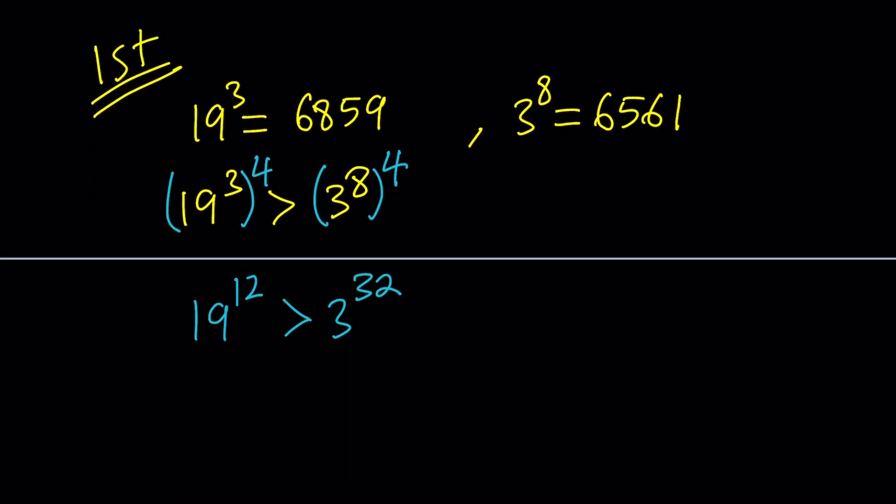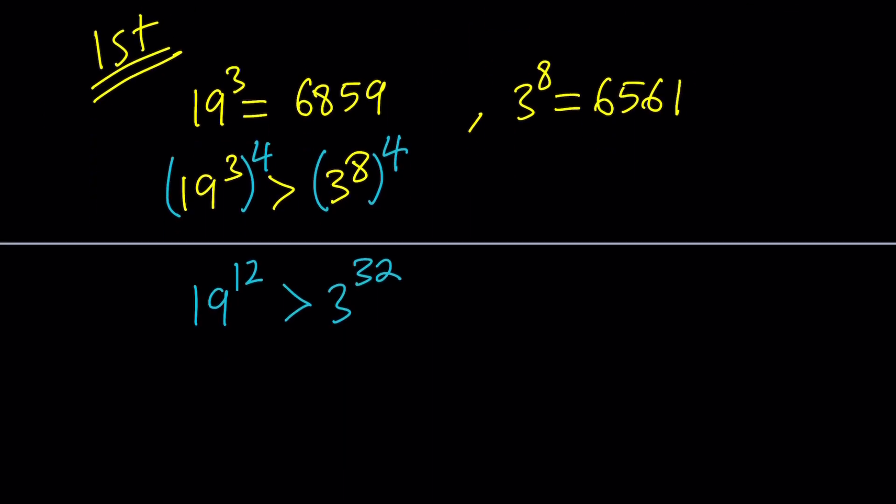And that's going to give us 19 to the power 12 is greater than 3 to the power 32. It's closed. Our larger number is 19 to the power 12. That's the winner. Alright, so let's go ahead and take a look at the second method now.